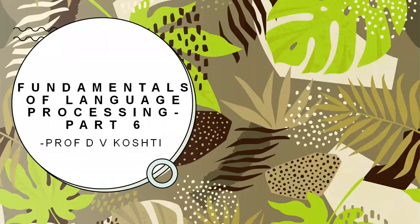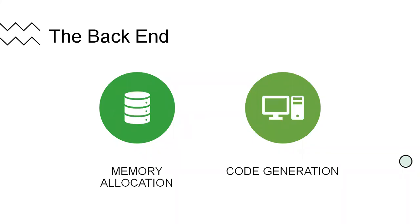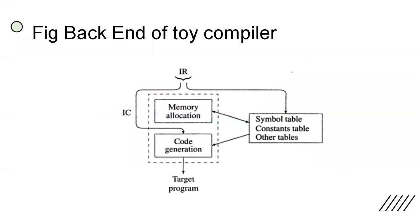In this lecture, we are going to see the backend of the TOI compiler. Welcome, Professor Deepak Kosti. We are going to see the backend as just mentioned. In the previous lectures, we have seen how the front end works — that is lexical, syntax, and semantic analysis along with IR. IR is nothing but IC plus different tables. Now the backend includes two steps: memory allocation and code generation.